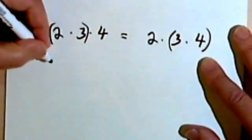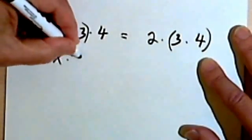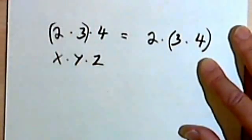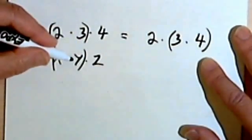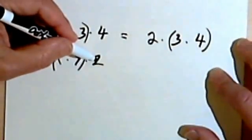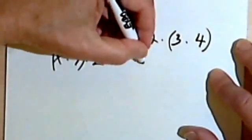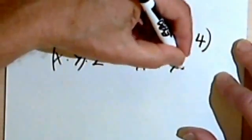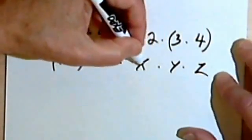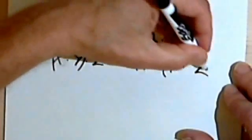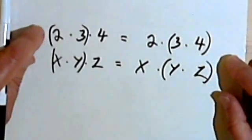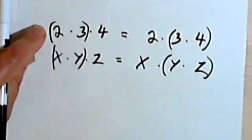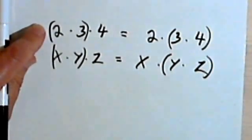So I can have x times y times z, and I could multiply the x and the y first, and then multiply the product times z. Or I could have x and y and z, and multiply the x by the product of the y and the z. So this is the associative property of multiplication. Once again, I think this is common sense. You probably knew it already.